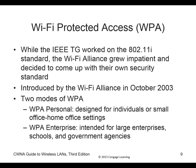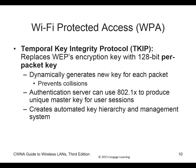Personal is for SOHO routers; enterprise is for schools, government agencies, and similar organizations. TKIP replaces the 128-bit encryption key with a per-packet key — every packet has its own key. This prevents collisions: if two packets going down the pipe both have the same key, they can collide and the computer won't know which is which.